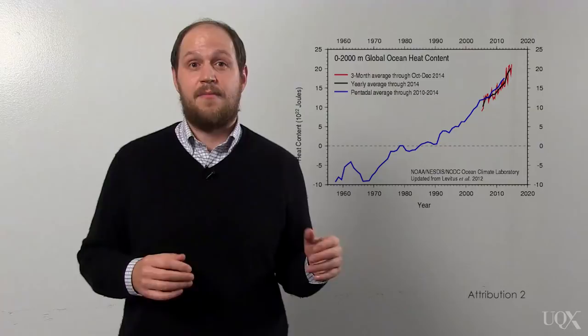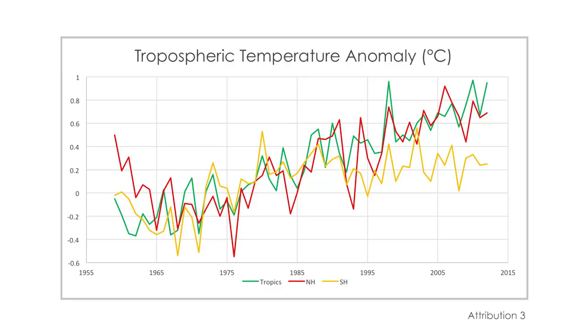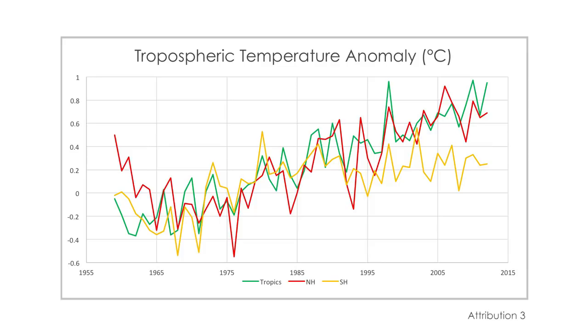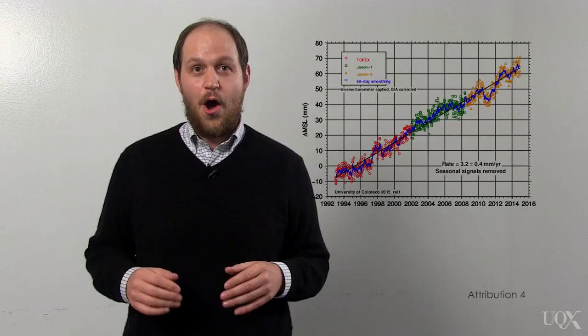We also monitor ocean temperatures using buoys and measurements from ships and large networks of floats. The ocean surface is warming and heat is building up below the surface. We can also observe warming using weather balloons and satellites in the lower atmosphere.